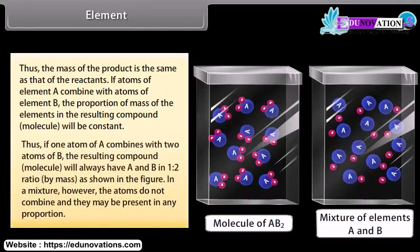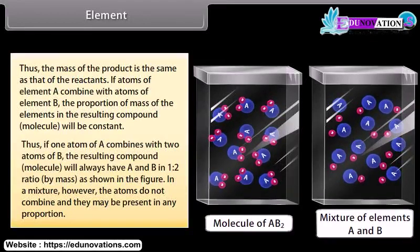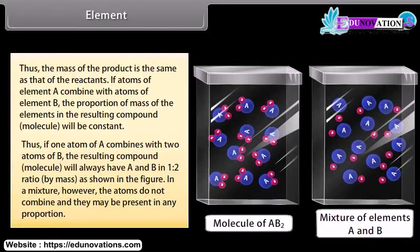Thus, if one atom of A combines with two atoms of B, the resulting compound molecule will always have A and B in a 1:2 ratio by mass. In a mixture, however, the atoms do not combine and they may be present in any proportion.